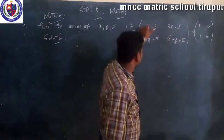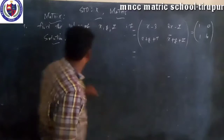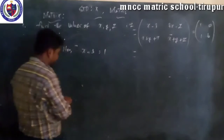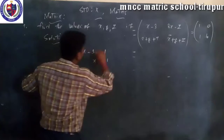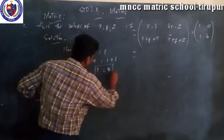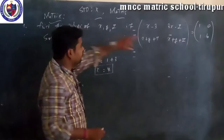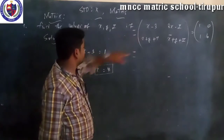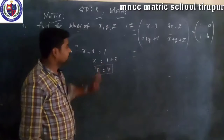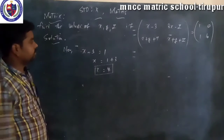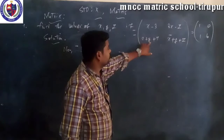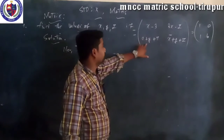First of all, x minus 3 is equal to 1. So x is equal to 1 plus 3, which is equal to 4. So x is equal to 4.